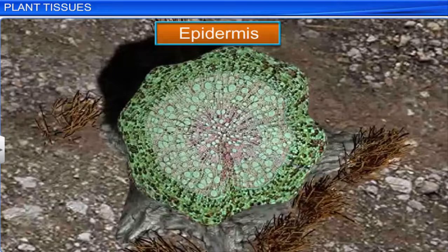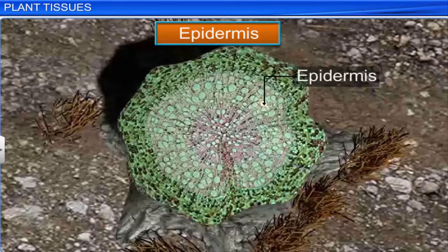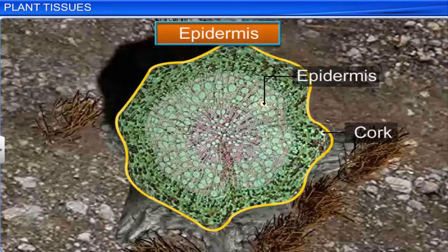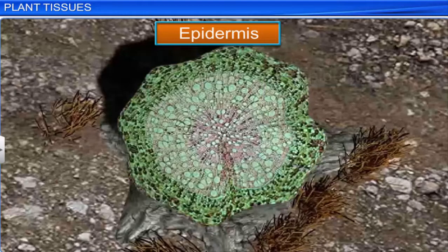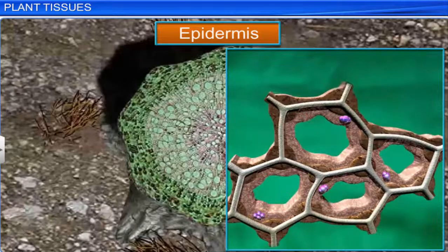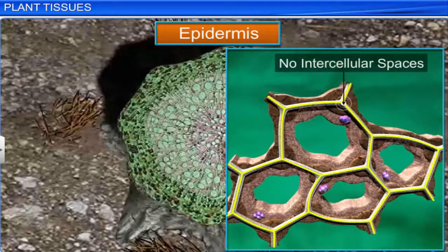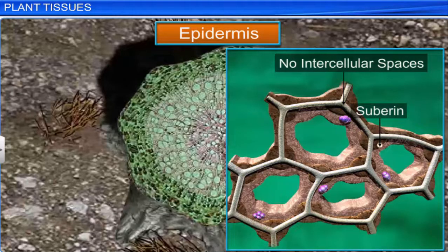As the plant grows older, secondary meristems replace the outer protective tissue. This outermost layer in older roots and stems is called cork. Cork cells are dead and lack intercellular spaces. Cell walls are thickened by suberin, which makes them impermeable to gases and water.